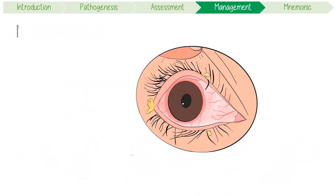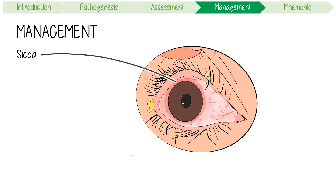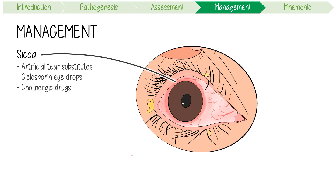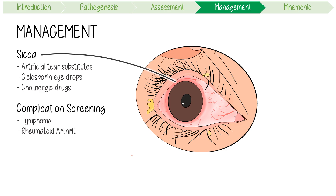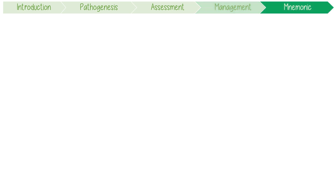The actual management of Sjogren's syndrome is very basic and largely symptomatic. Sicca symptoms can be managed with artificial tear supplements, cyclosporine eye drops, or cholinergic drugs. Complication screening and treatment is also important, especially for lymphoma and rheumatoid arthritis.